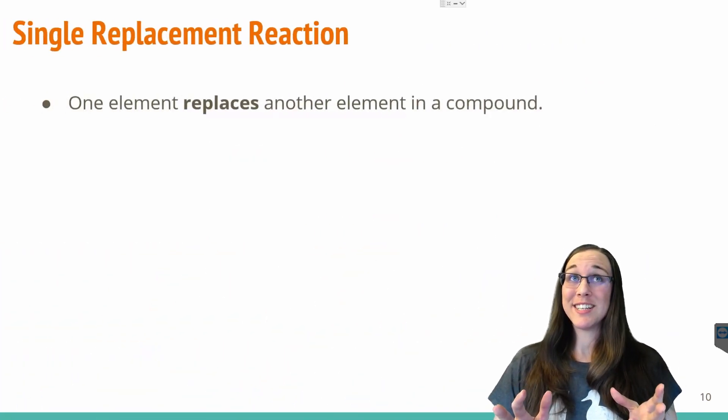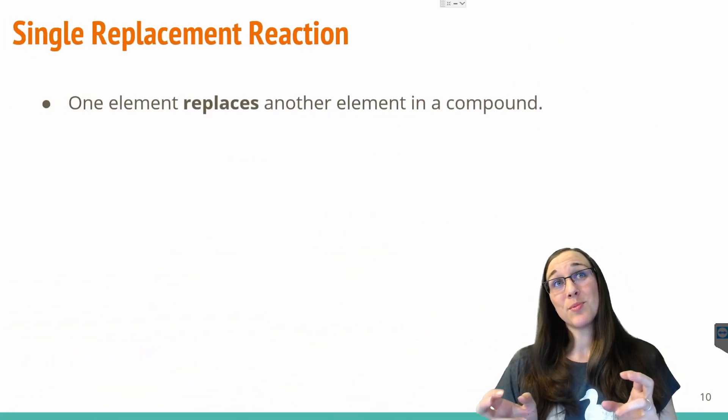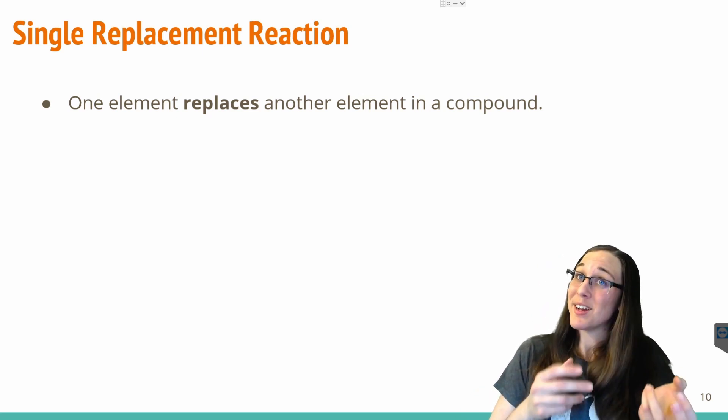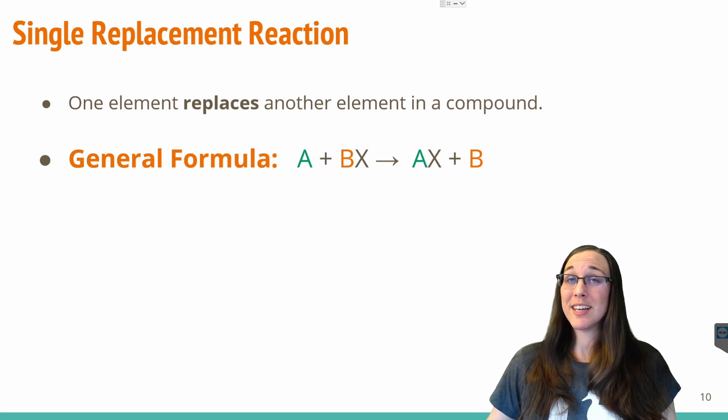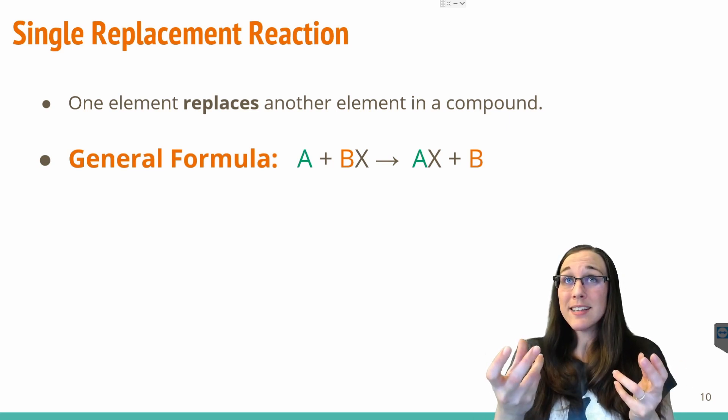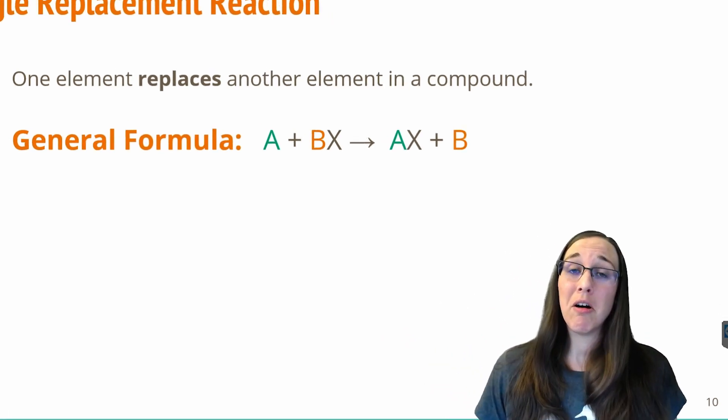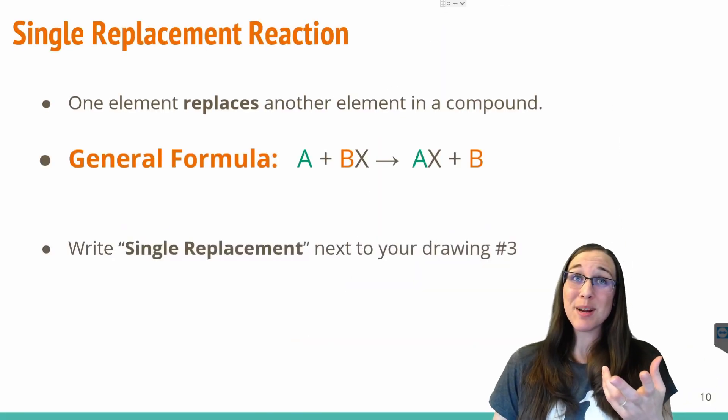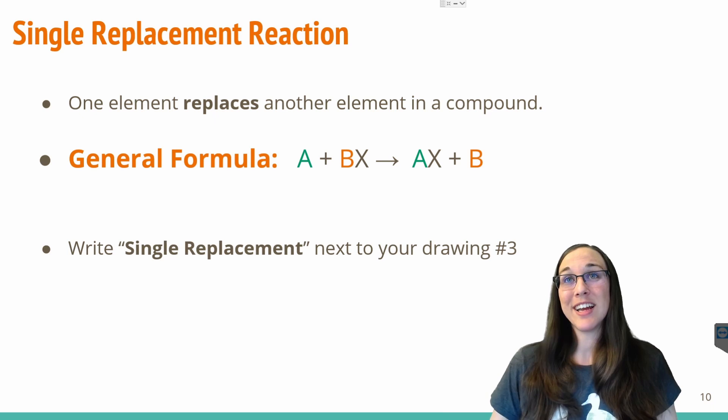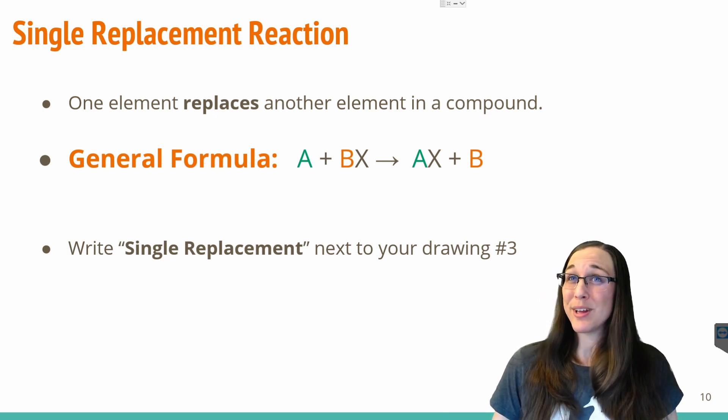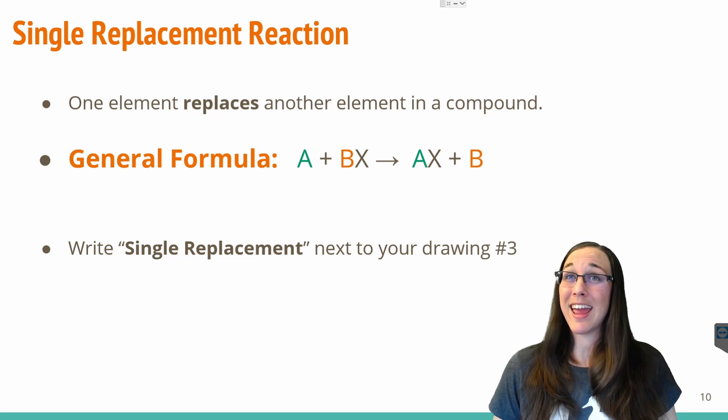This type of reaction is called a single replacement reaction. That's where one element or one atom type replaces another element or atom type in a compound. The general formula for this is A plus BX results in A now paired with X and B being all alone. So this is like drawing number three for you. Write single replacement next to that drawing to help you remember what's going on at a molecular level. This is that whole third wheel scenario. So A was the third wheel and A stole X's heart and left B out in the cold.